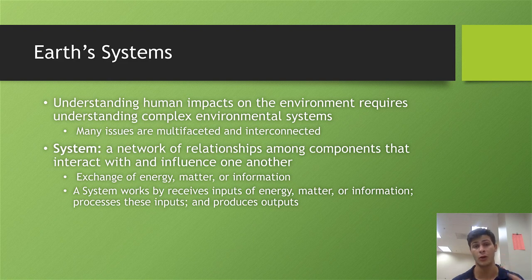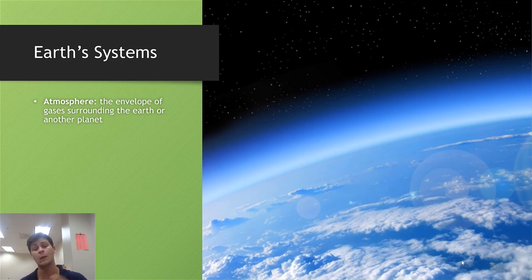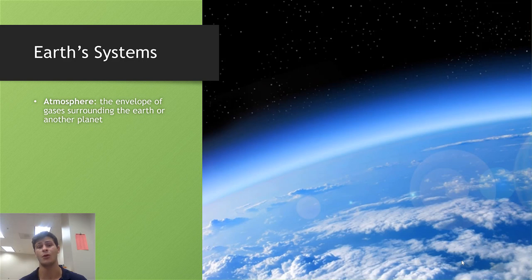There are four major systems within the Earth. The first is the atmosphere, which can be thought of as the envelope of gases surrounding the entire Earth or any other planet. There are multiple layers of the atmosphere, but we'll dive into that in a later chapter. For now, just think of the atmosphere as the gaseous system that surrounds the entire planet.